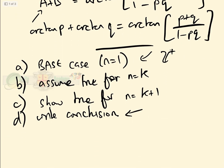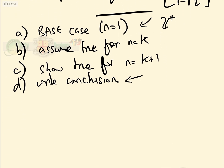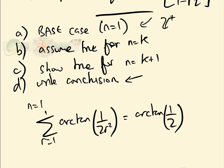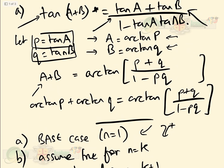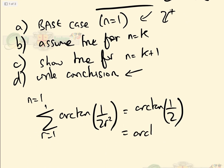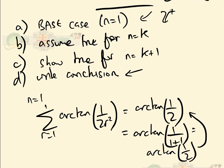For the base case, we let n equal 1. The sum from r equals 1 to 1 of arctan of 1 over 2r squared equals arctan of 1 over 2, which is arctan one-half. According to our formula, arctan n over n plus 1 with n equals 1 gives arctan 1 over 2, which is also arctan one-half. So the formula is correct for n equals 1 — our base case.